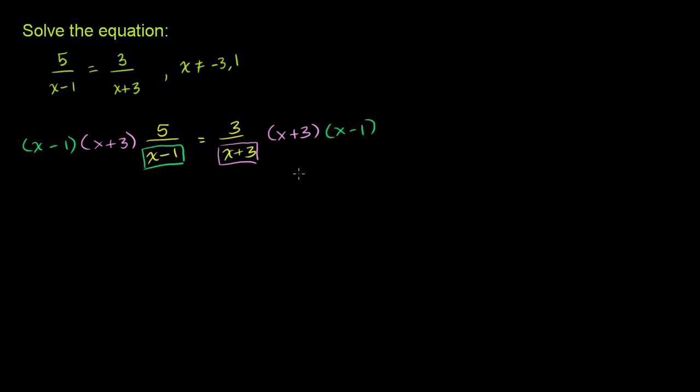Now, when we do this, what's going to happen? Well, the whole point of multiplying by x minus 1 is so that that cancels out with that. And the whole reason behind multiplying by x plus 3 is so that this cancels out with this. So we end up with 5 times x plus 3 is equal to 3 times x minus 1.